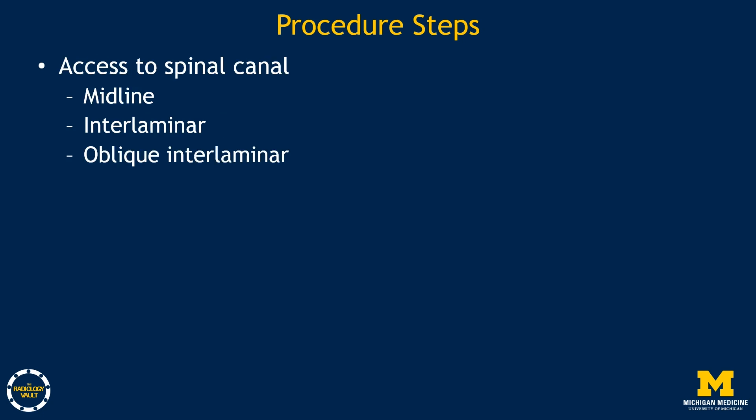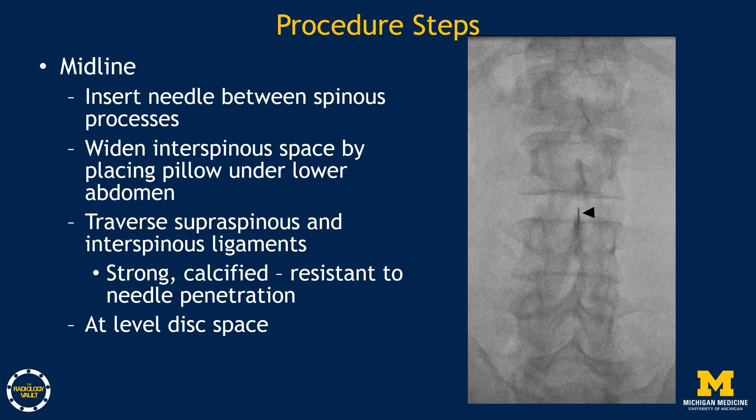The spinal canal can be accessed in a number of ways. Using the midline approach, the needle is inserted between the spinous processes. Placing a pillow under the lower abdomen can widen the interspinous space, allowing easier access. With this route, the supraspinous and interspinous ligaments are traversed, which can be strong, calcified, and resistant to needle penetration. This is also at the level of the disc space, which can be the narrowest part of the spinal canal with degenerative change.